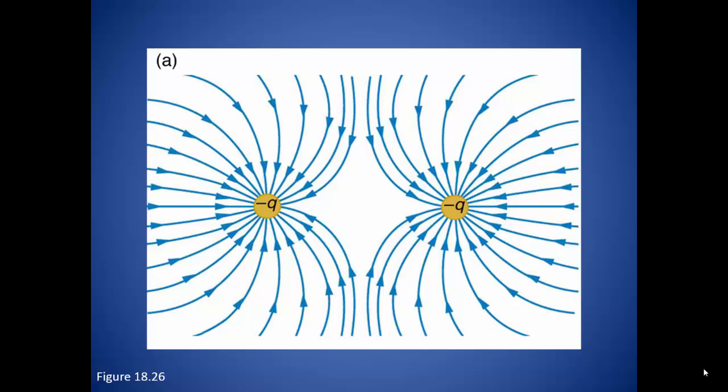In this case we have two negative charges. The field that is produced is very similar to the field with the two positive charges, with the only difference being that the field lines are moving into the charges. Since the charges are equal in magnitude, we have the same number of lines radiating out. And since it is a negative charge, we have the field moving into the negative.